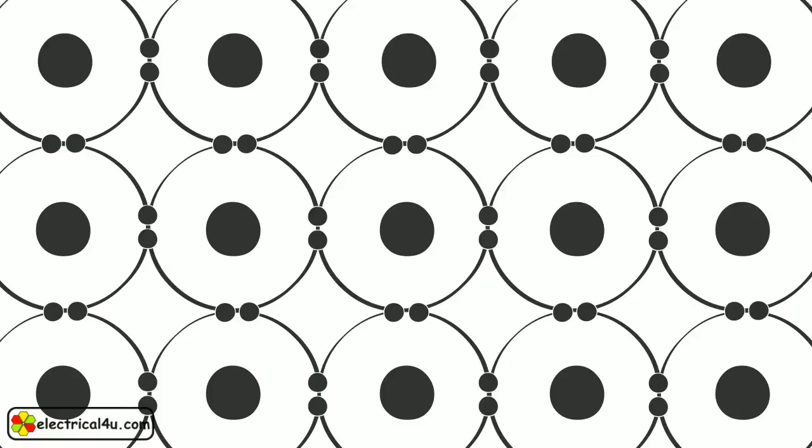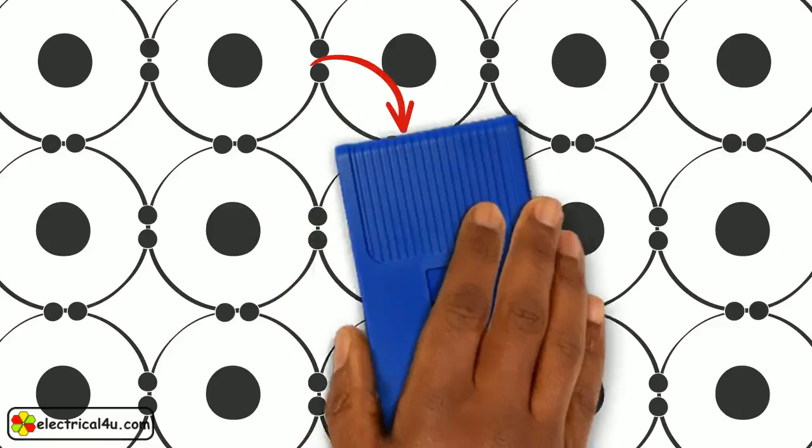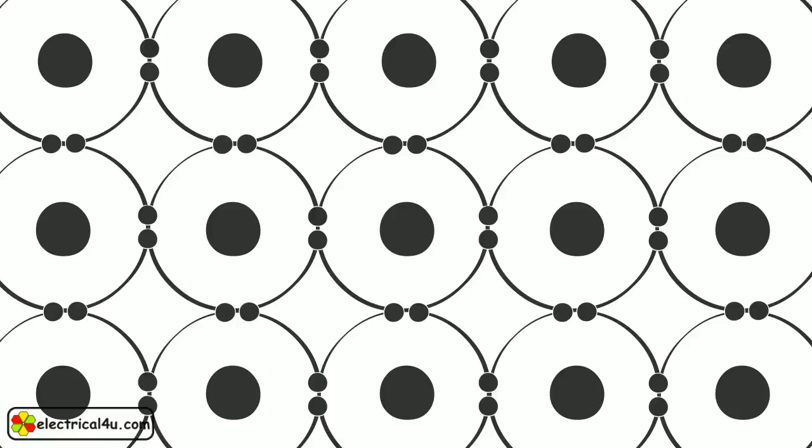Sharing of electrons of the neighboring atoms to satisfy the need to have 8 electrons on the valence shell in an atom is called covalent bonding. Because of covalent bonding, that is bonding through sharing of electrons, it is seen that the valence shells of all the atoms are full, that is all of them have 8 electrons in their outermost orbit.